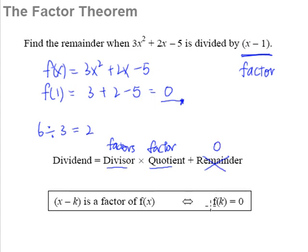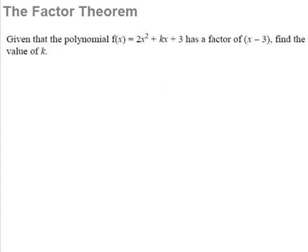So let's take a look at one example. Here we go, a short and simple example. Now given that the polynomial f(x) has a factor of x minus 3, find the value of k. So we're interested in the value of k and we know that x minus 3 is a factor of f(x).